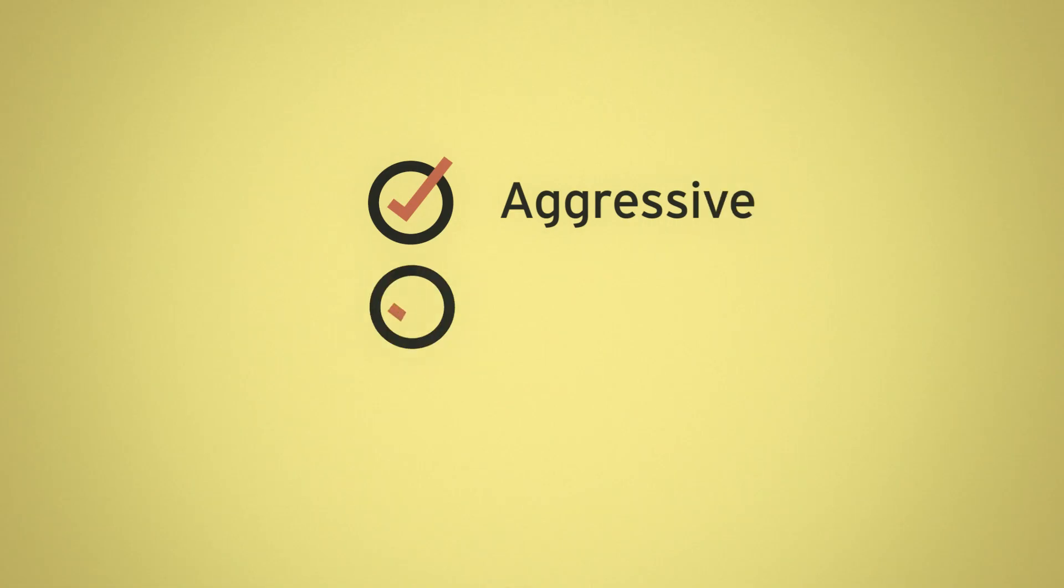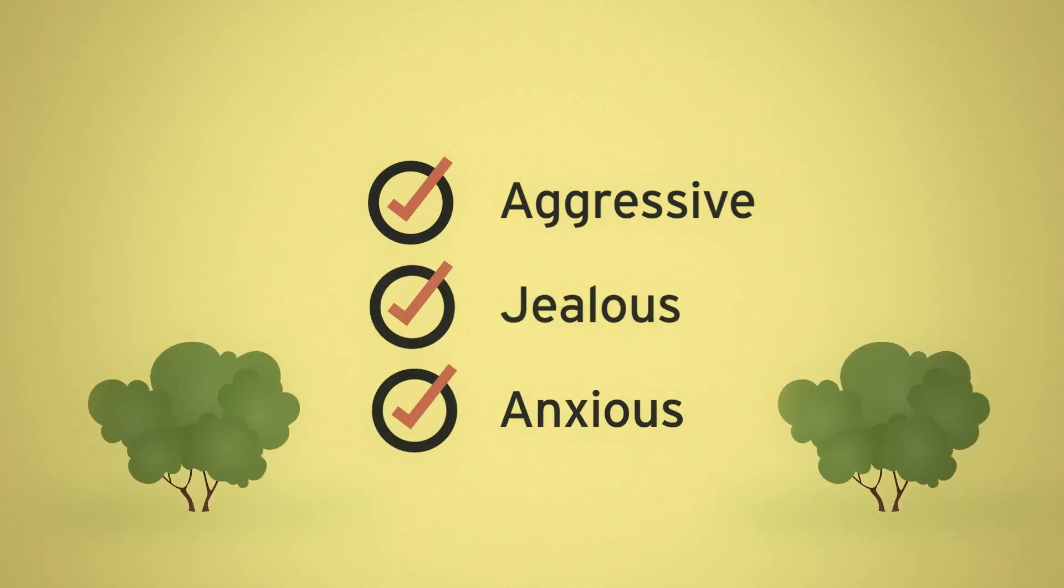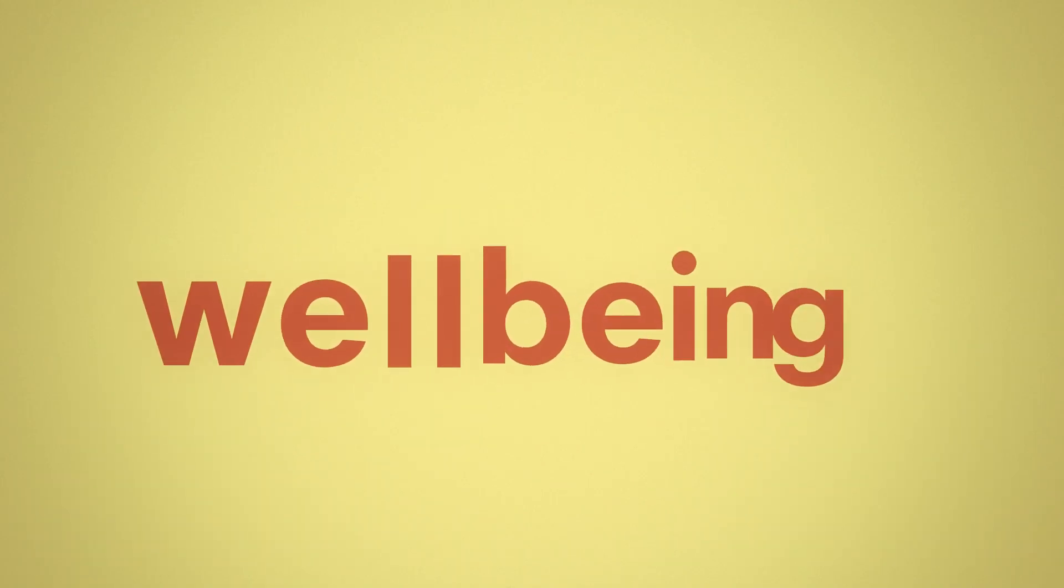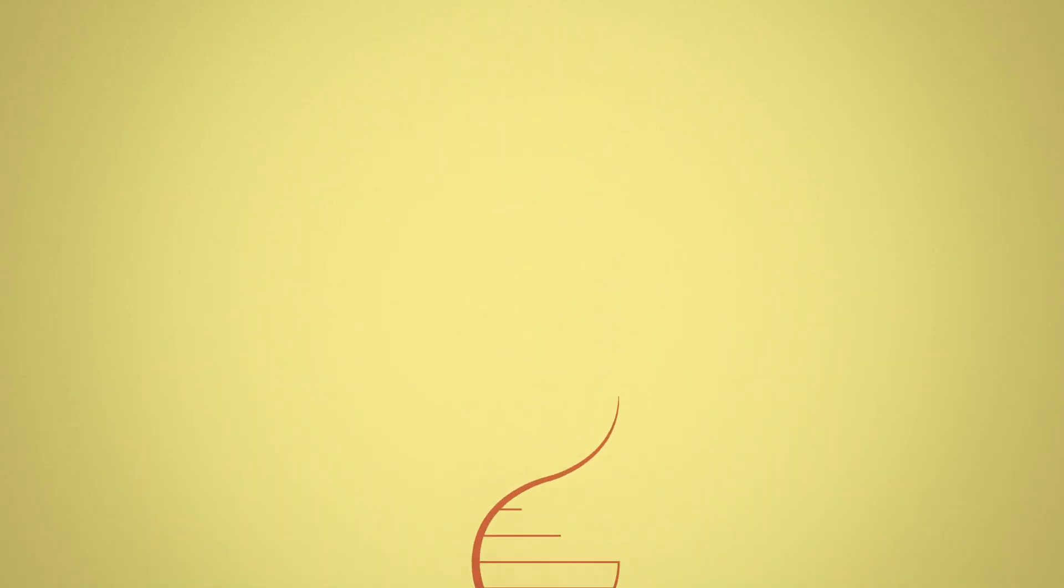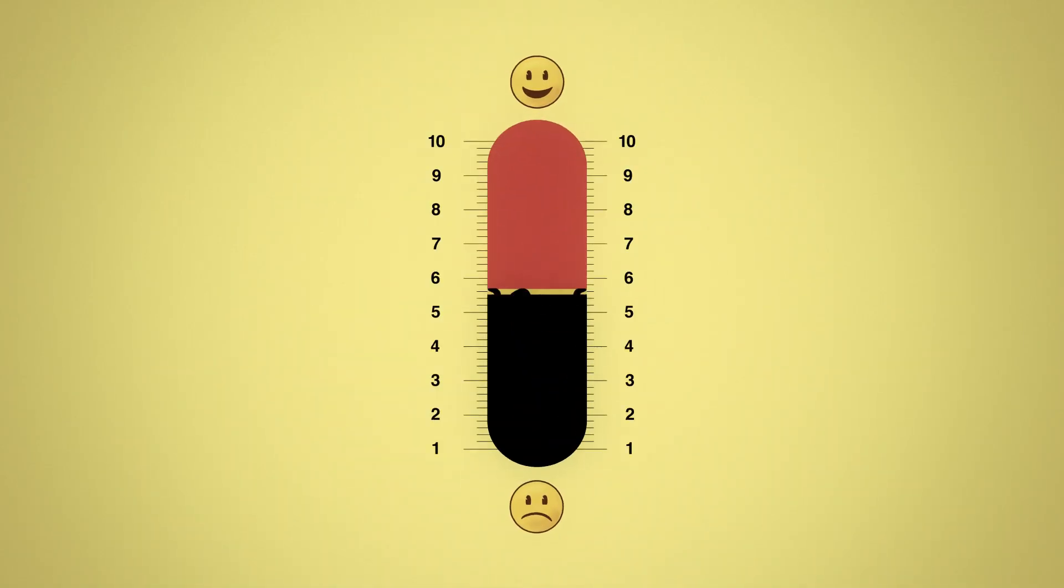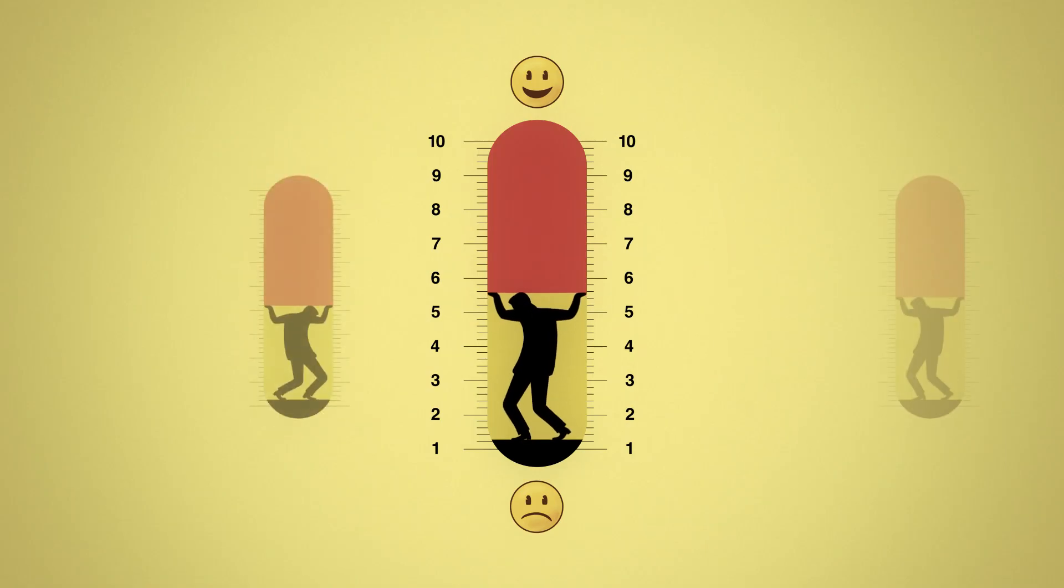Our biology has barely changed in 200,000 years, which means that whilst culture and society has arguably made progress, we are still those same aggressive, jealous, anxious, savannah-dwelling hunter-gatherers. This is why Pearce argues that if we ever hope to increase the wellbeing of our species, we will have to edit our genes.